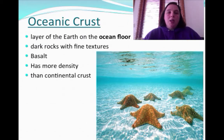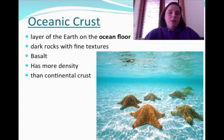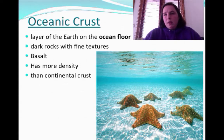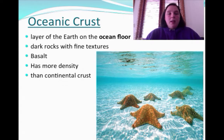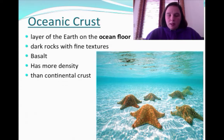Then you get to the oceanic crust. This is the layer of the earth on the ocean floor, and its rocks are different — they're very dark and have what's considered fine texture, which kind of means smooth. Basalt is the name of that rock, and it has more density than the continental crust, which is a big deal.